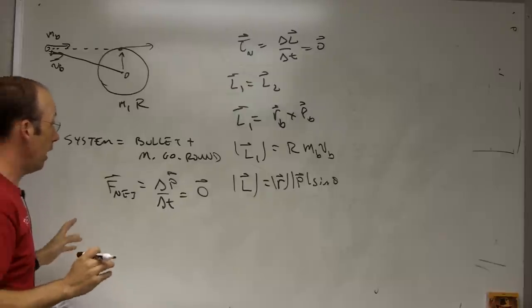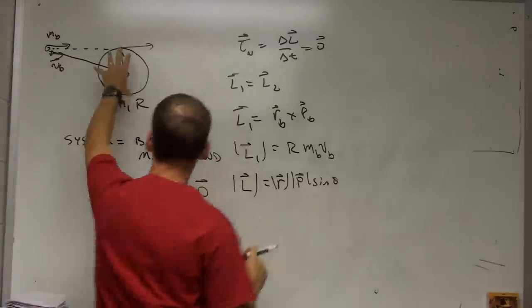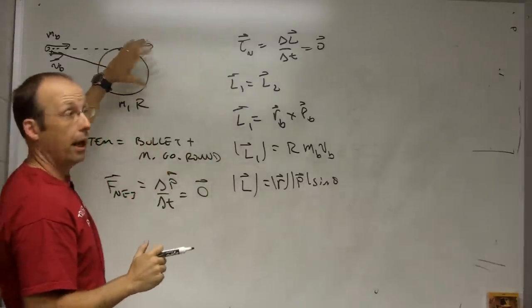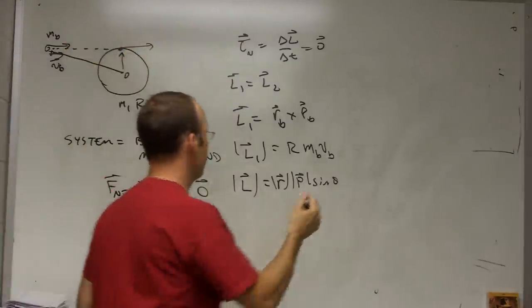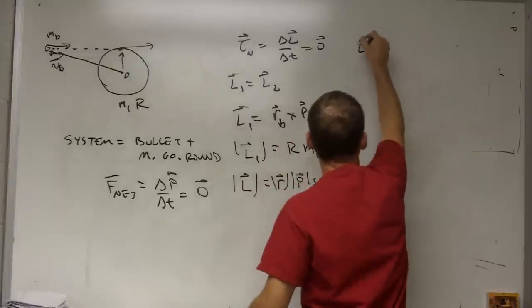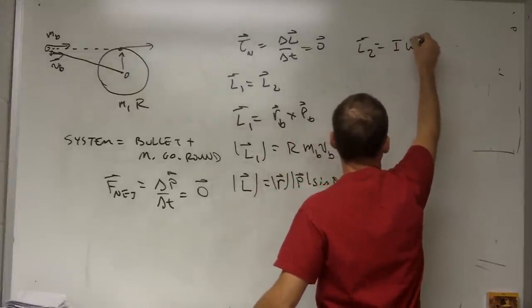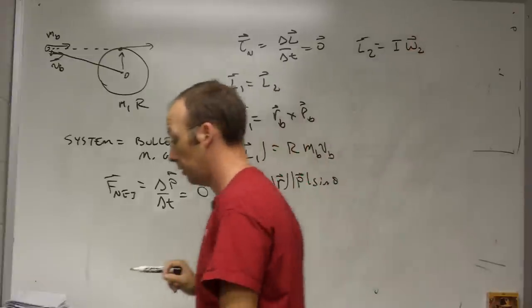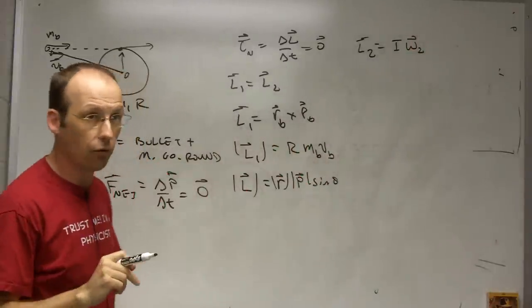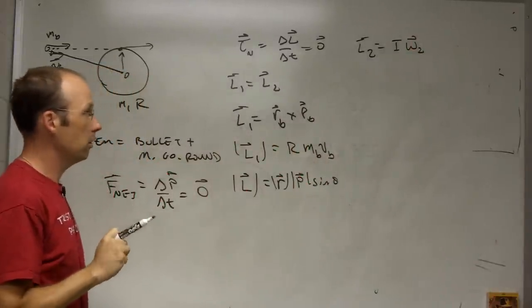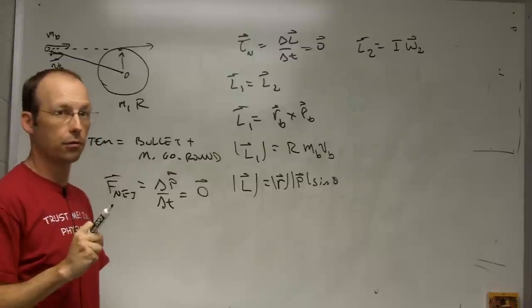Okay. What about afterwards? Afterwards, I have the disk spinning and it's a rigid object. So I'm going to have to use L2 equals I omega 2, where omega 2 is the angular velocity of the disk. And that's technically wrong. But I'm, no, I'm going to do that. I'm going to do it this way.